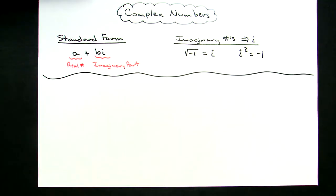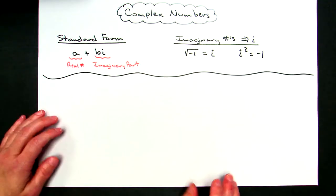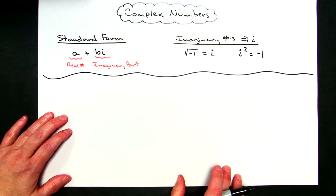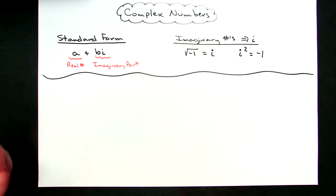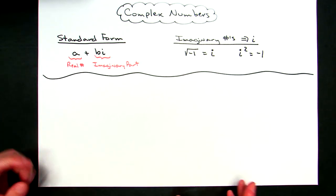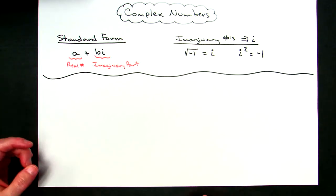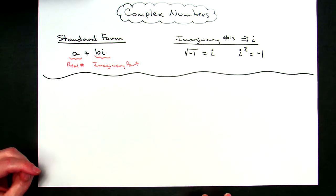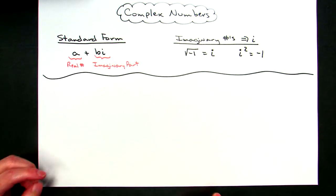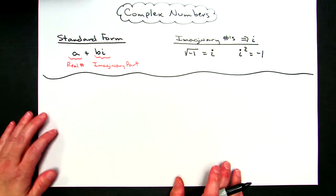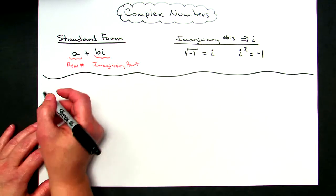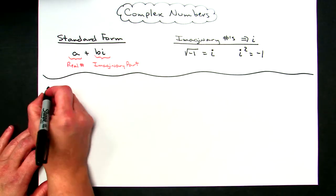Basically what we're going to do with these complex numbers is simplify them. We're going to maybe do FOIL, we're going to do distributive property, we'll combine like terms. Anything that you can do with a standard polynomial, you can also do with complex numbers.